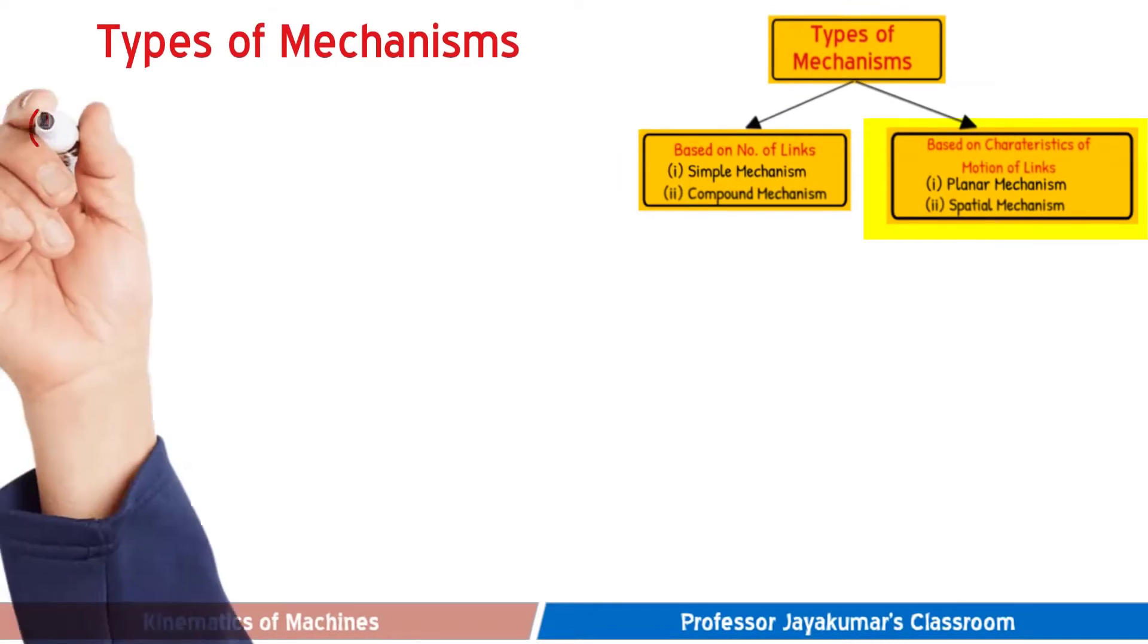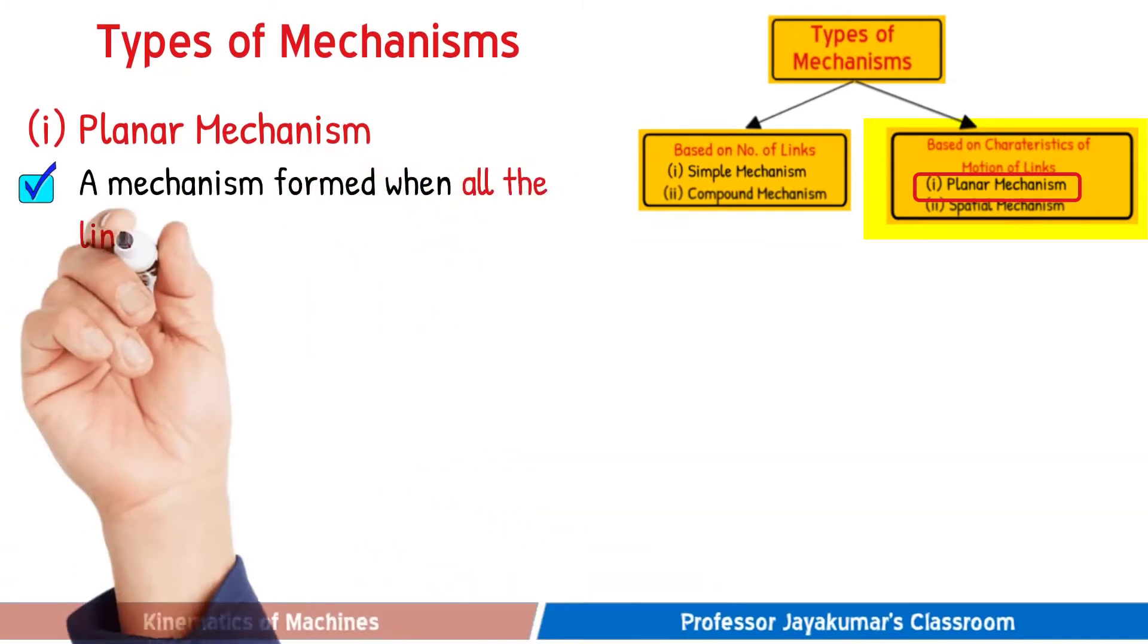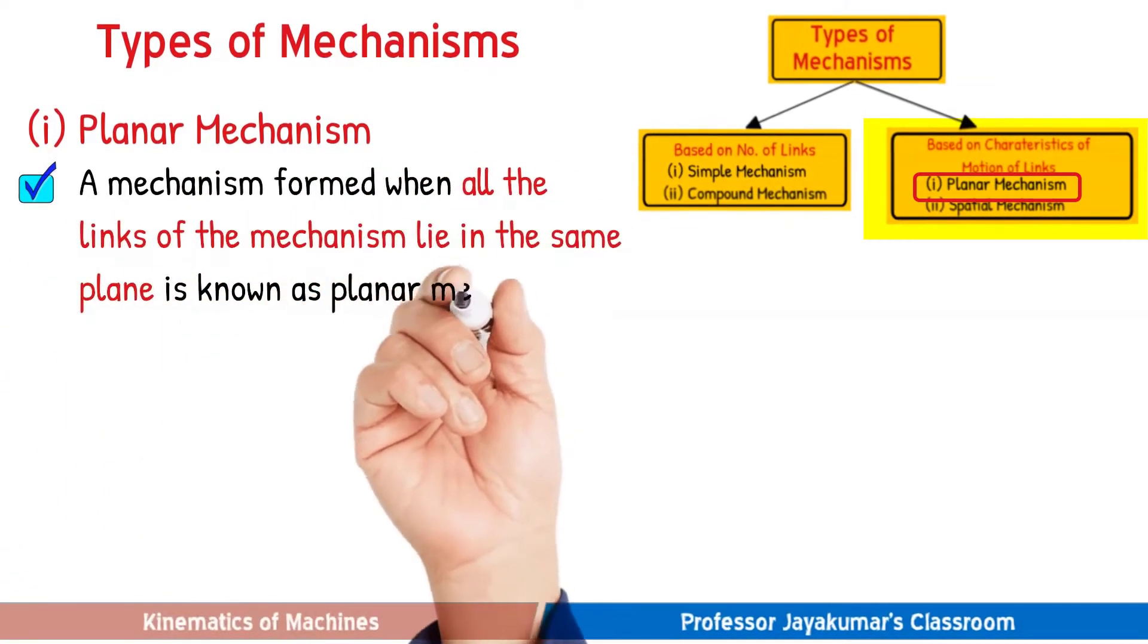In the second classification, we will talk about planar mechanism now. A mechanism formed when all the links of the mechanism lie in the same plane, it is known as planar mechanism. In planar mechanism, the complete motion paths of the mechanism can be represented by a single plane.